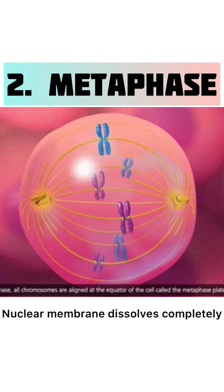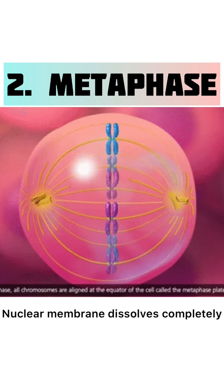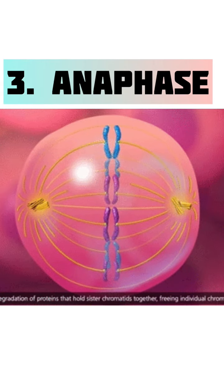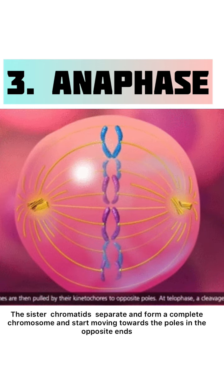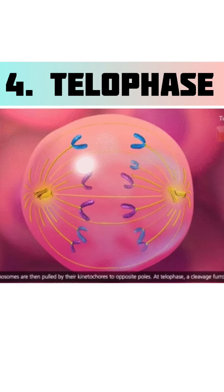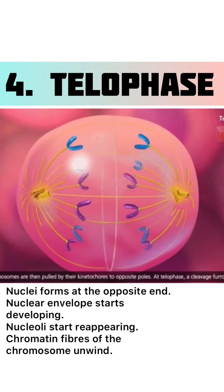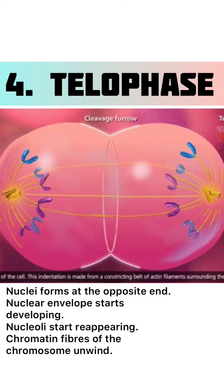Stage 2: Metaphase. The chromosomes arrange themselves at the metaphase plate at 90 degrees to the spindle poles. The pairs of centromeres present in the chromosomes start to move away. The sister chromatids — paired chromosomes — separate and form complete chromosomes termed daughter chromosomes, and start moving towards the poles at opposite ends. At this point, the genetic material of the parent cell is equally divided into two daughter cells.